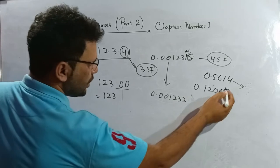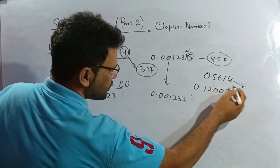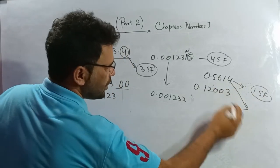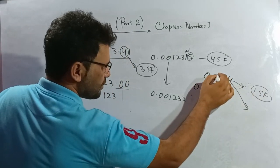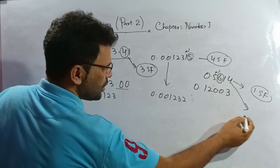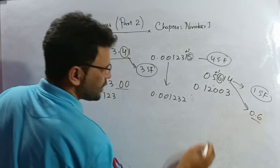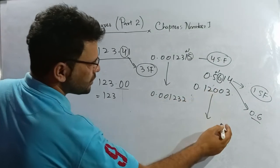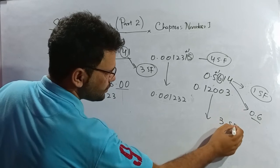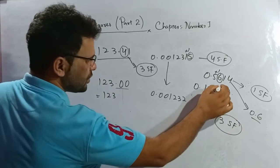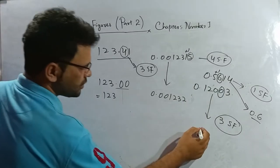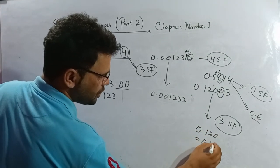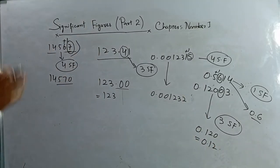Similarly, if the question is to write 0.5614 correct to one significant figure, I check the second one which is 6 — greater than five, so I add one. The answer is 0.6. If the question asks for three SF, I check the fourth: it is less than five, so the answer is 0.120, which we can write as 0.12.